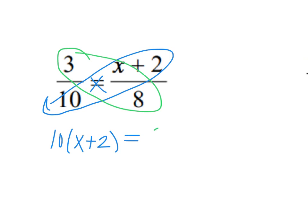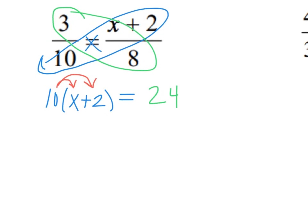I now distribute my 10 to my x and my 10 to my 2 because it's got parentheses. So I get 10 times x, which is 10x. I get 10 times 2, which is 20. And then I get equals 24.